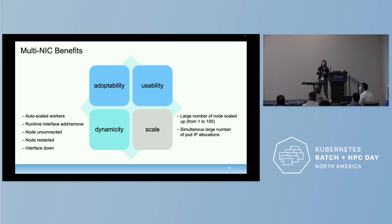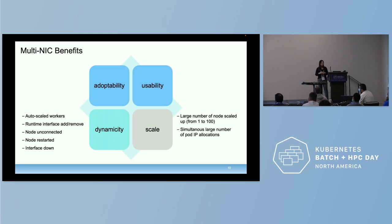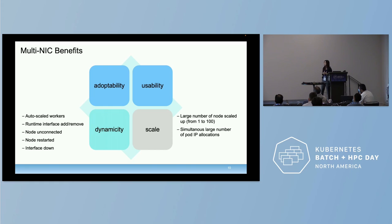Nodes can be disconnected or reset at any time — these are the dynamicity challenges we have to handle. We also consider scaling: we expect nodes can be scaled up to 100 or more, and we have to handle that simultaneously with a large number of pod IP allocations.